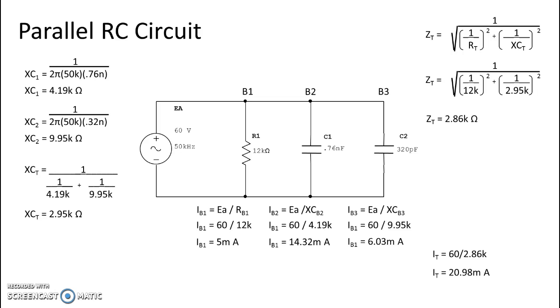If you remember from our previous examples, you can add like currents together. So we can add 14.32 milliamps and 6.03 milliamps together to get a total current for our capacitors, and using that with our 5 milliamps, we can verify that we did our problem correctly.